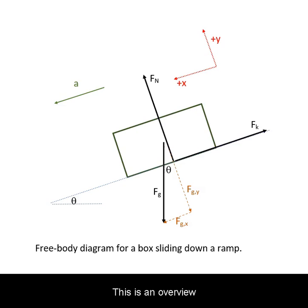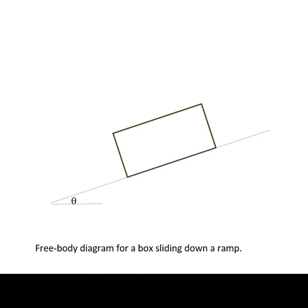This is an overview of a free-body diagram for a box sliding down a ramp. You first start with a representation of the box itself, as well as lightly representing the contact surface of the ramp.